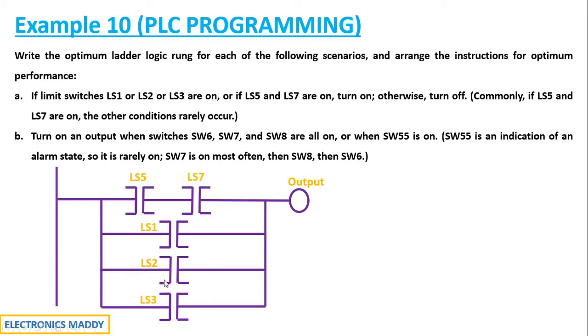If you place LS1 above, LS2 above, LS3 above and LS5, LS7 underneath, it has to go through each of the rung conditions to get the output. This is where we say we will be saving time by having LS5 and LS7 in series initially because they have already given that commonly, if LS5 and LS7 are on, the other conditions rarely occur. If this is on, other conditions rarely occur and we don't have to even check because this is OR operation.